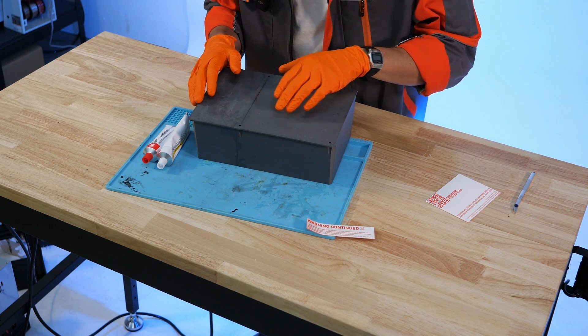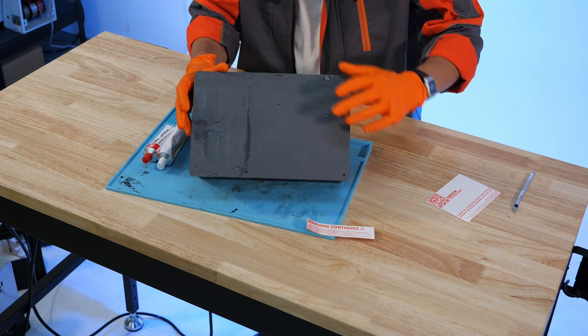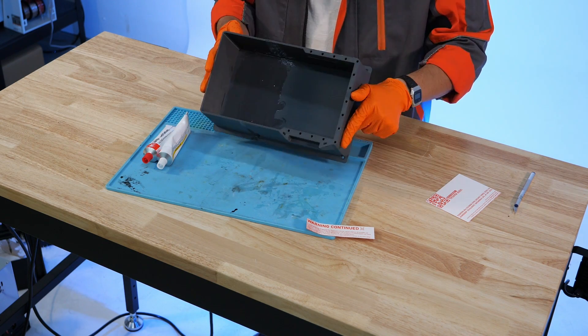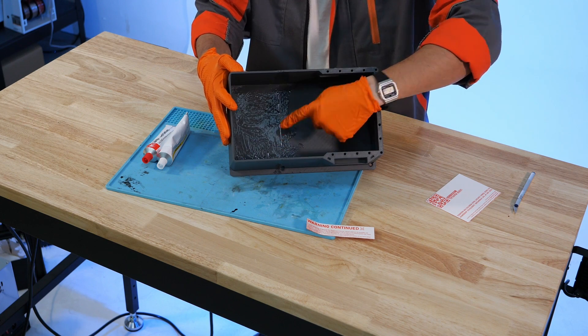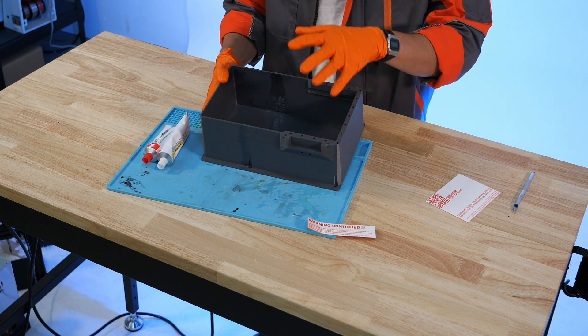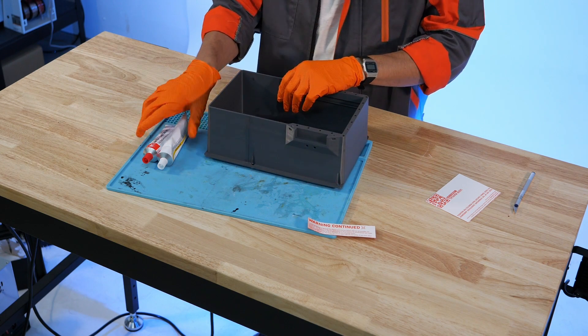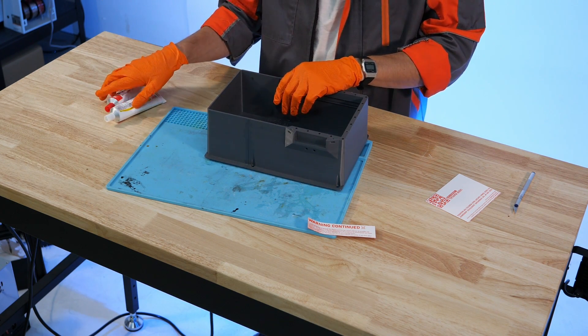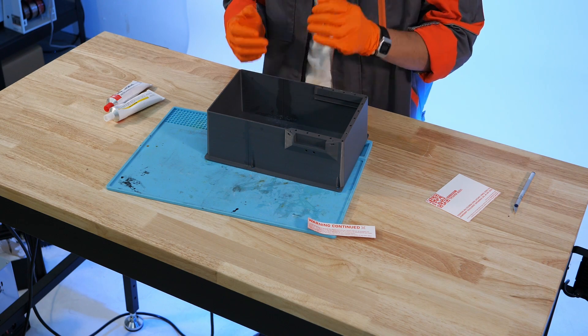So after letting this cure for a bit we can take a look at the bottom here and we can see everything seems pretty decently cured and we have the beginnings of our layer inside here. Now upon closer inspection I can see that some of this isn't totally cured and that's okay. We're going to go forward and use most of the rest of this epoxy to fill out and totally seal the interior of this container.